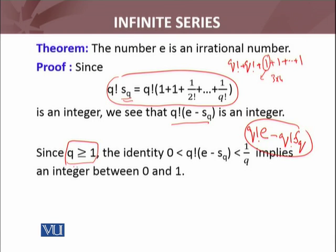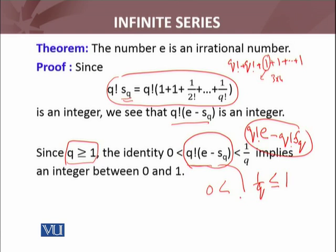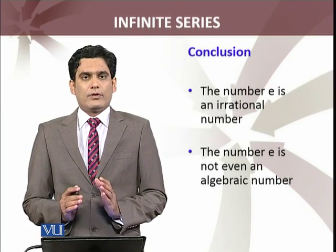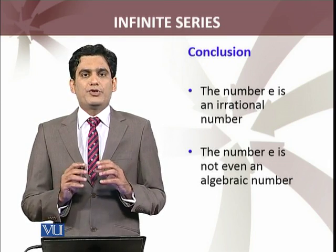Since q ≥ 1, from the inequality we have: 0 ≤ q!·(e − s_q) < 1/q ≤ 1. So this integer q!·(e − s_q) is strictly greater than 0 and less than 1. But is there any integer strictly between 0 and 1? There is no integer between 0 and 1. Hence we have reached a contradiction.